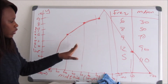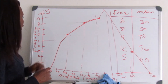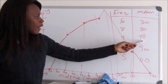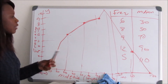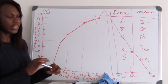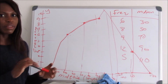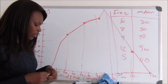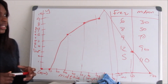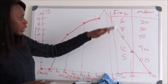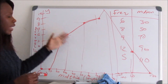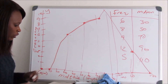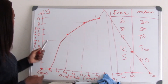You can draw the frequency polygon from the histogram by joining the midpoints of the bars, or another way is to use the midpoint column from the frequency table directly — which is what we did here. We did not first draw the histogram; we went straight from the frequency table.